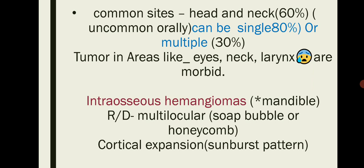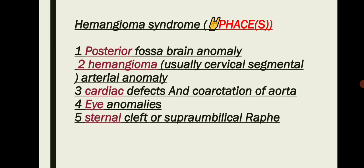Hemangiomas can also occur intraosseously — inside the bone. Out of the maxilla and mandible, the mandible is most commonly affected in the intraosseous type. Radiographically, you will notice a multilocular radiolucency appearing as a soap bubble pattern for larger locules or a honeycomb pattern for smaller ones. Cortical expansion can give a sunburst pattern, also seen in other bone diseases.